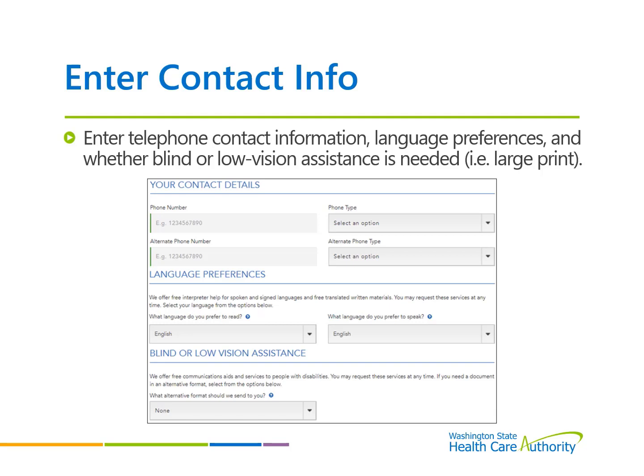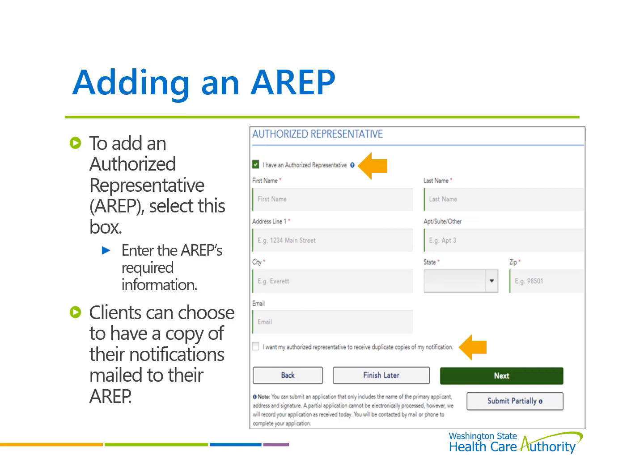Enter the telephone contact information, language preferences, and indicate whether blind or low vision assistance is needed. Select this box if the client wants to add an authorized representative to their account. The authorized representative is a person 18 or older who is not an employee of HCA, who has sufficient knowledge of the household circumstances, and can act on behalf of the household for all matters related to the application and account. Enter the AREP's first and last name and mailing address. If the client wants, duplicate notifications can be sent to their AREP.